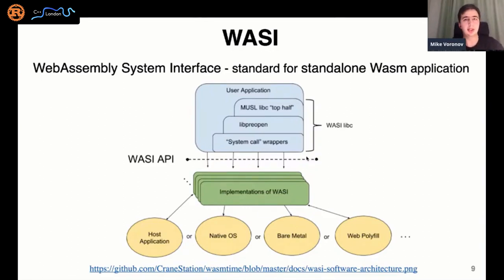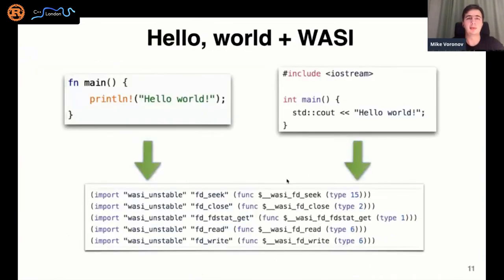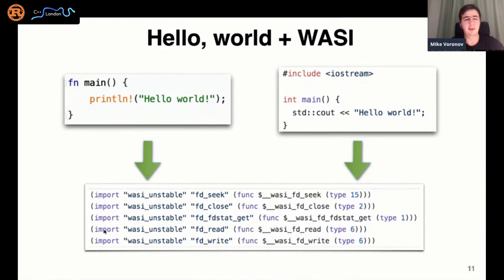Another important element from the WebAssembly world is WASI — WebAssembly System Interface. It's a standard for imports from a WASM module, about 50 POSIX-like imports. You can find all of them by link. Here you can see two hello-world programs written in Rust and C++. If you compile them with the WASI SDK for C++ and the wasm32-wasi target for Rust, you obtain similar imports in your WASM binary. WASM is a place where Rust and C++ can compile to forms that are similar to each other.